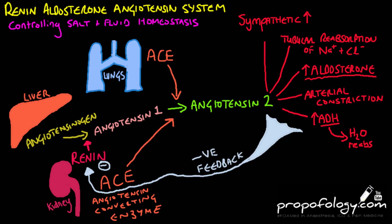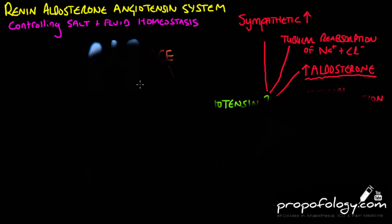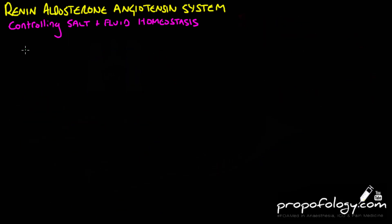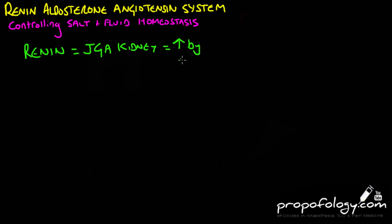Let's recap. Renin is made in the juxtaglomerular apparatus. It is stimulated by raised sympathetic tone, falling plasma volume in the blood, and prostaglandins like PGE2.